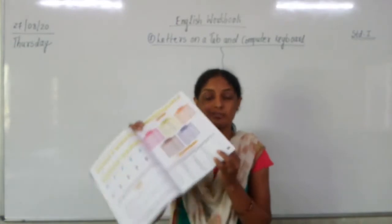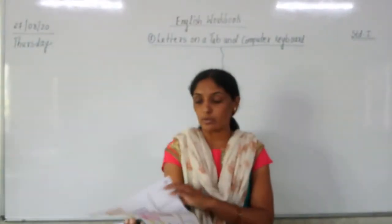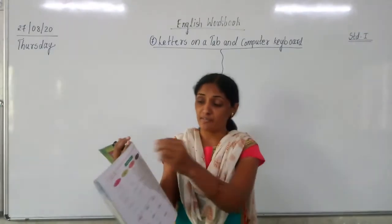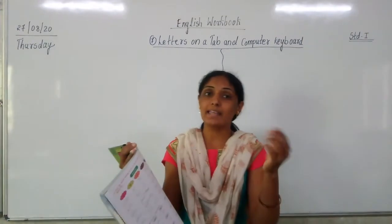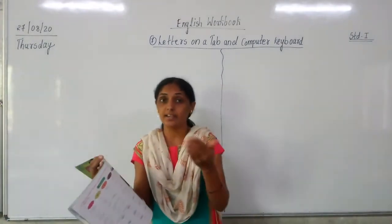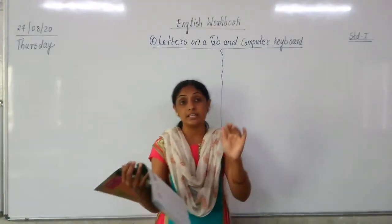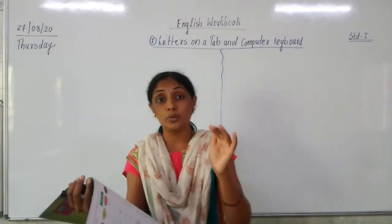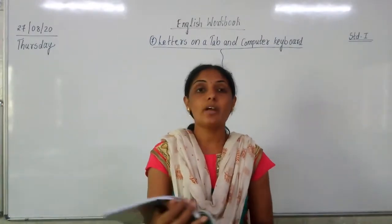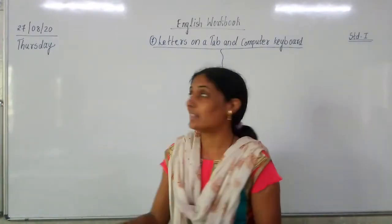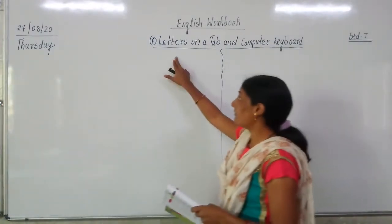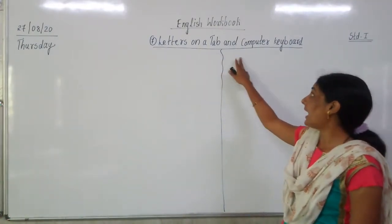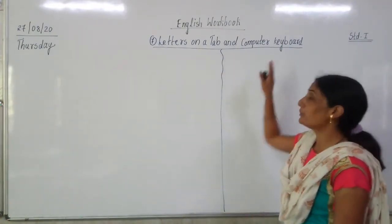We have done 'on' and 'out', then we had to copy words by adding endings. Today we are going to start with Lesson number 7, and the name of our lesson is 'Letters on a Tab and Computer Keyboard'.